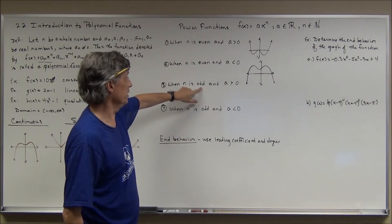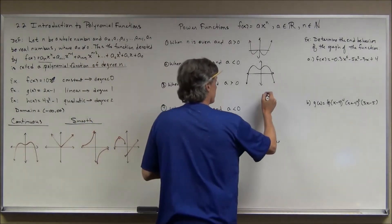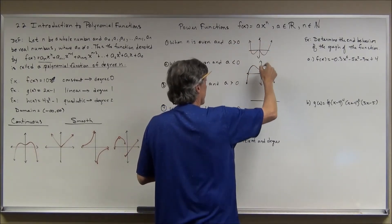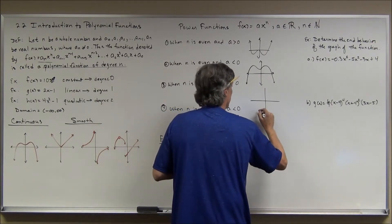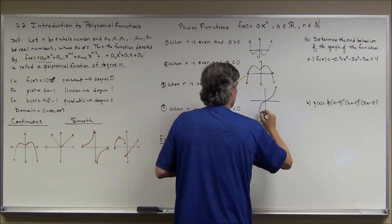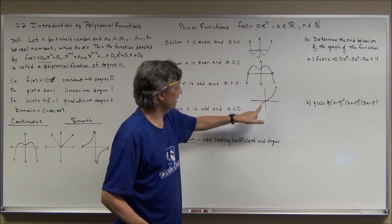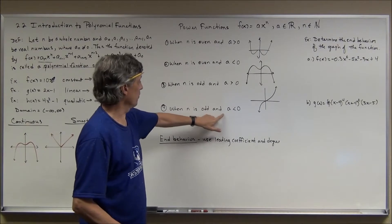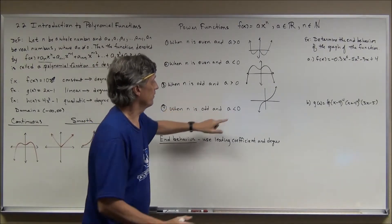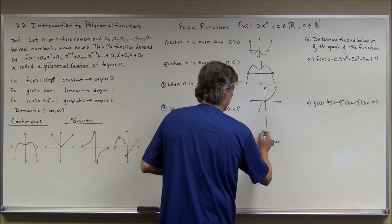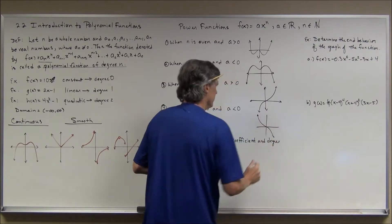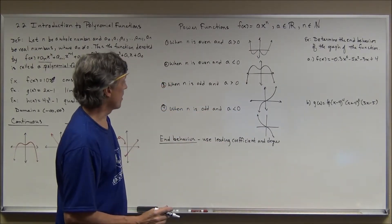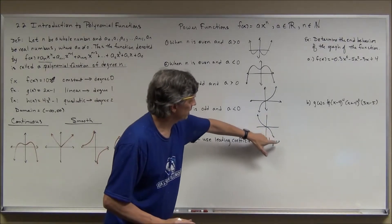When n is odd and a is positive, you get a graph going upward to the right and downward to the left — similar to a cubic curve. When n is odd and a is negative, it's the opposite: the graph goes down to the right and up to the left. These are rough sketches showing the general shape; the actual graph could have additional turns depending on the degree.